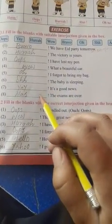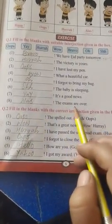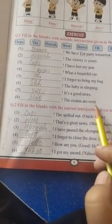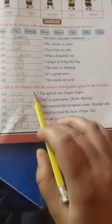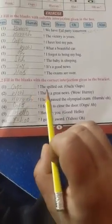Seventh is yay, it's good news. Eighth is alas, the exams are over. Now fill in the blanks with the correct interjection given in the brackets. Here are the words of interjection. We have to use the correct word of interjection to fill the blanks. The spilt out, oops, the spilt out. Wow, that's great news.